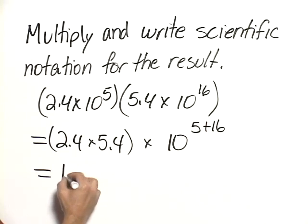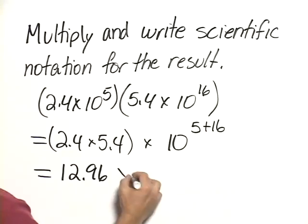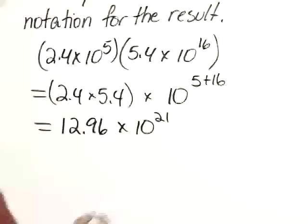Multiplying these numbers together, we get 12.96 times 10 to the 21st.